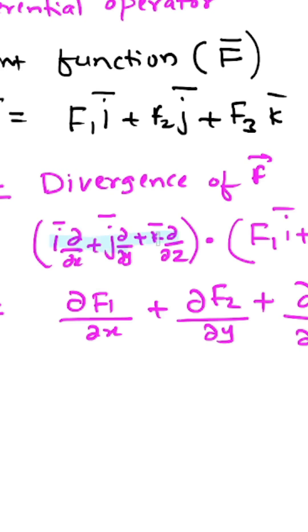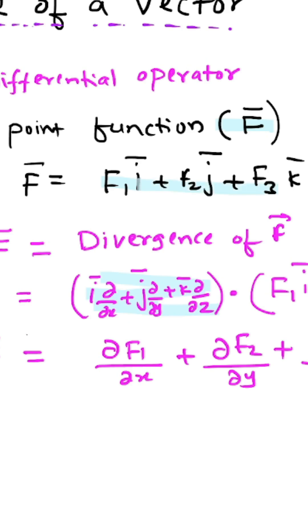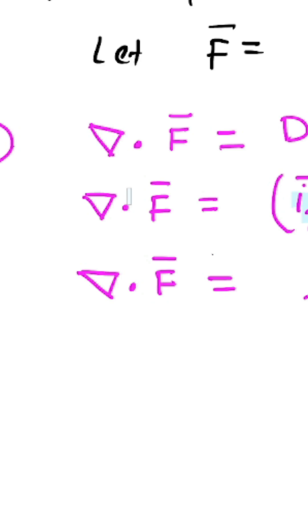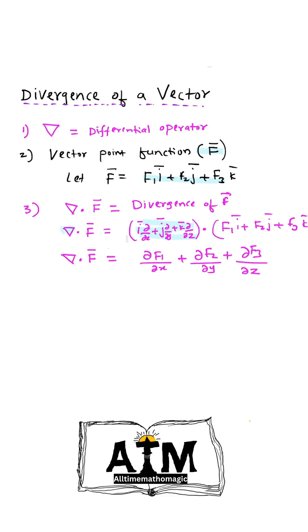Divergence of vector: suppose we want to find out the divergence of vector F. The vector F is given by F1 i plus F2 j plus F3 k. To find divergence of a vector, we find the dot product of the differential operator and vector F. The differential operator is denoted by nabla, so divergence of vector F equals nabla dot F.